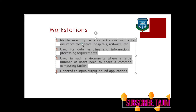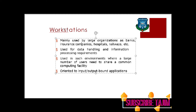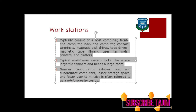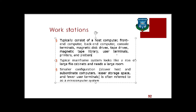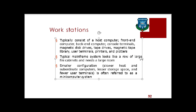Mainframe systems are mainly used by large organizations such as banks and insurance companies. They typically consist of a host computer, front-end computer, back-end computer, console terminals, magnetic disk drives, tape drives, magnetic tape library, user terminals, printers, and plotters. A typical mainframe system looks like a row of large file cabinets and needs a large room. A smaller configuration with a slower host and subordinate computers, lesser storage, and fewer user terminals is often referred to as a mini-computer system.